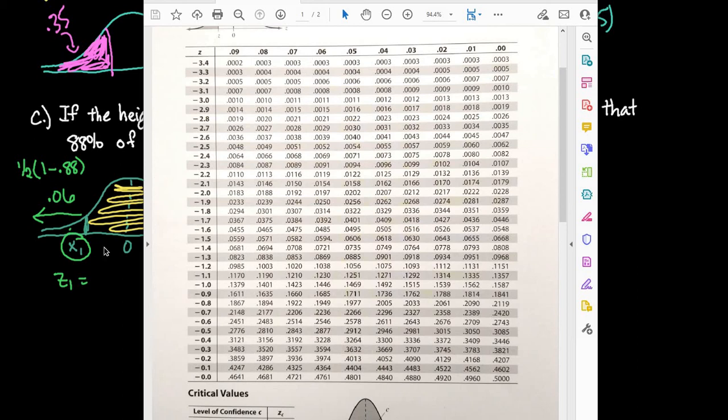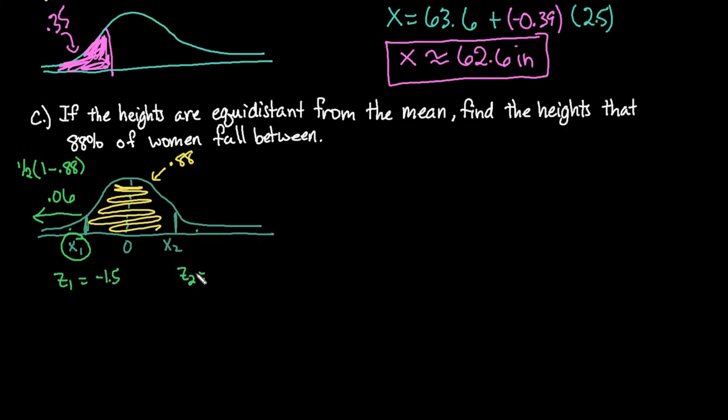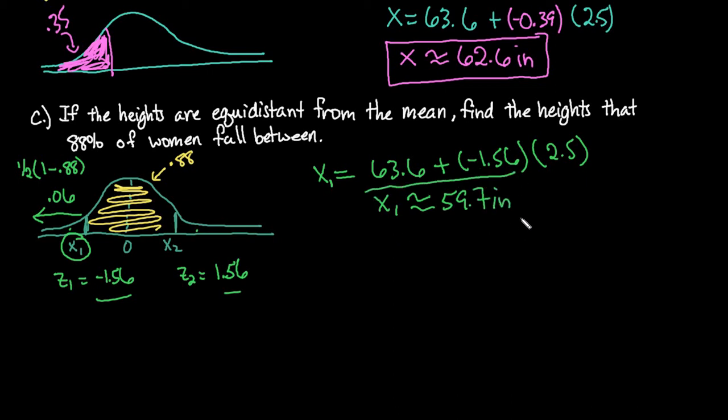The negative 1.56 is the value that I'm going to use and remember that our second z-score would just be the positive one in order for them to be equidistant from the mean. So we're going to use our formula again and so our first x value would be 63.6 plus our z-score of negative 1.56 times the standard deviation of 2.5 and when I plug that into my calculator my first x value is going to be 59.7 inches. So my first value is 59.7.